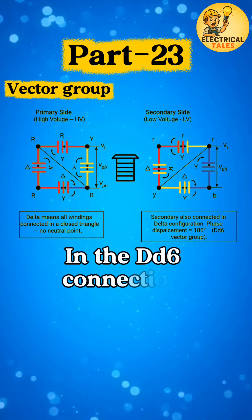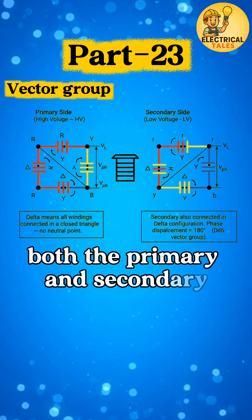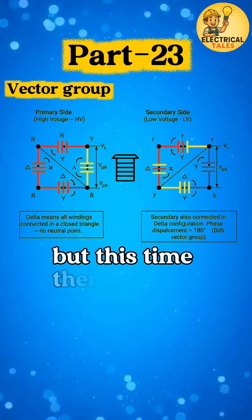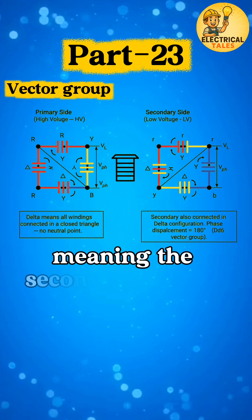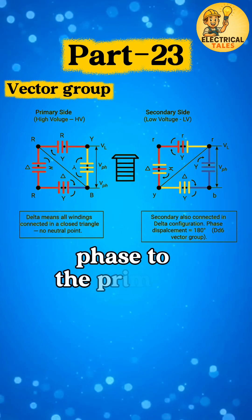In the DD-6 connection, both the primary and secondary windings are connected in delta, but this time there's a 180 degrees phase shift between the two sides, meaning the secondary voltage is completely opposite in phase to the primary.